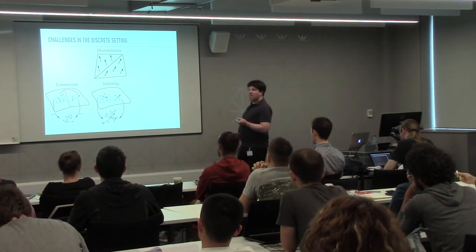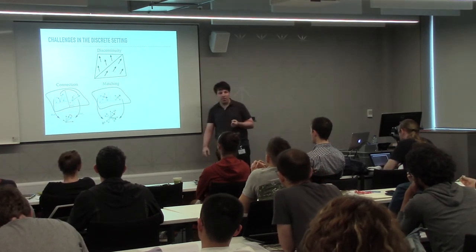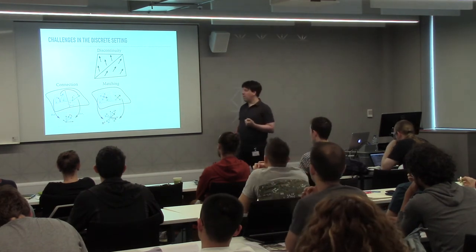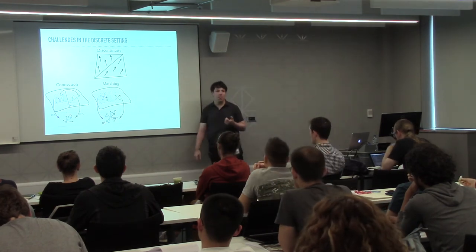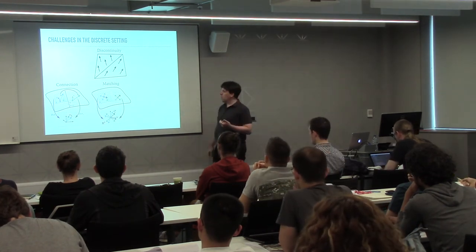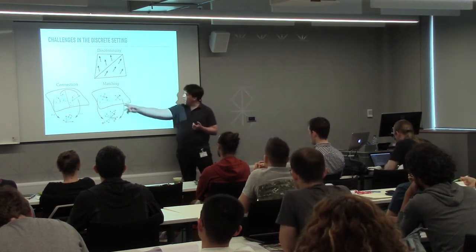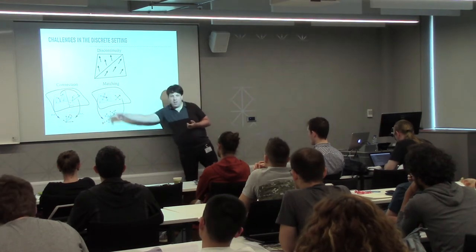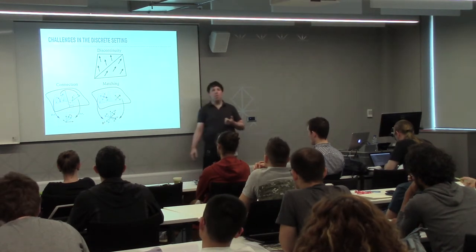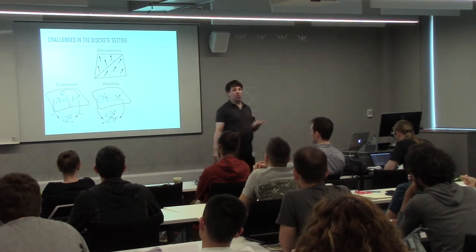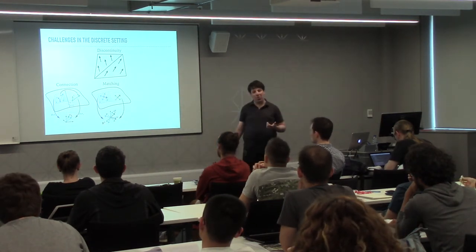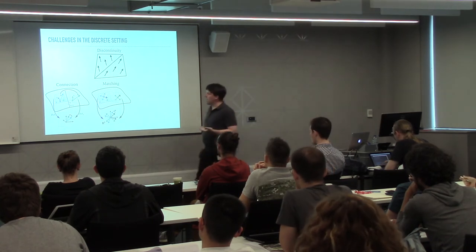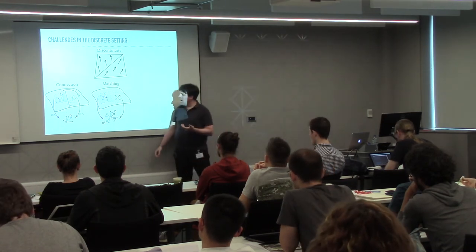Problem number two, which is specific to directional fields where you have more than one vector per face, is matching. Imagine I have several vectors here and several vectors there. I want to compare vectors, but to compare vectors I need to know who goes to whom — this is matching.